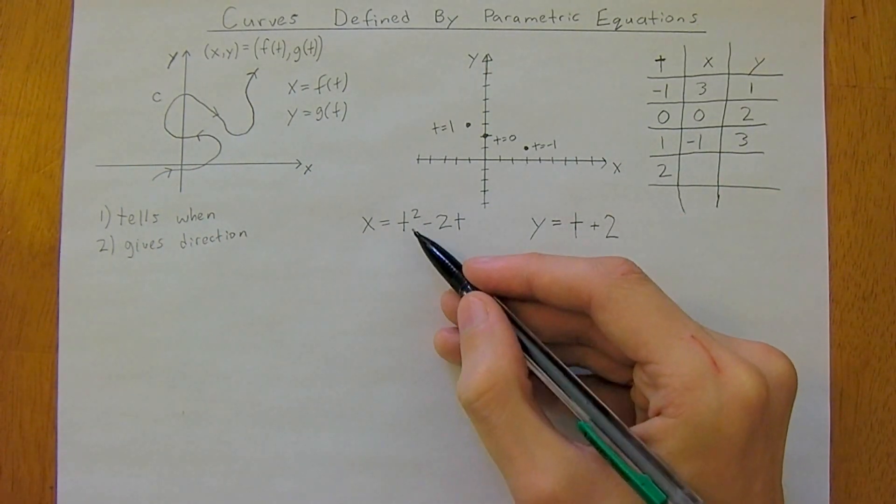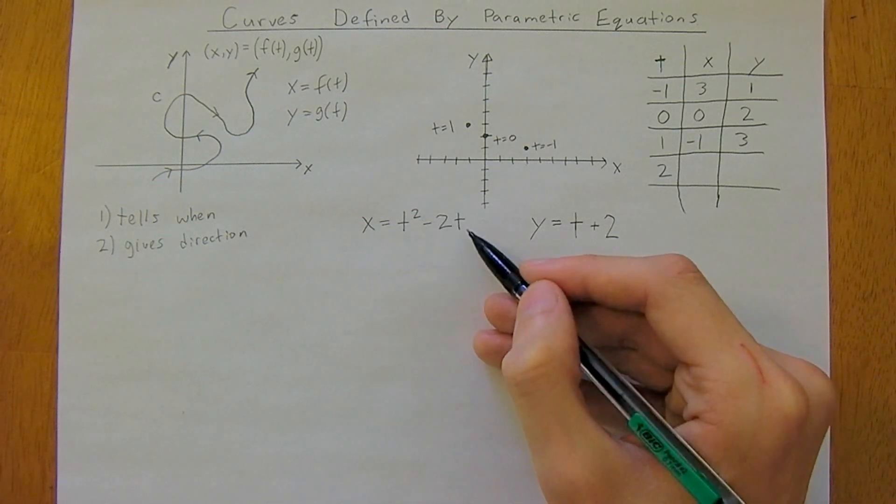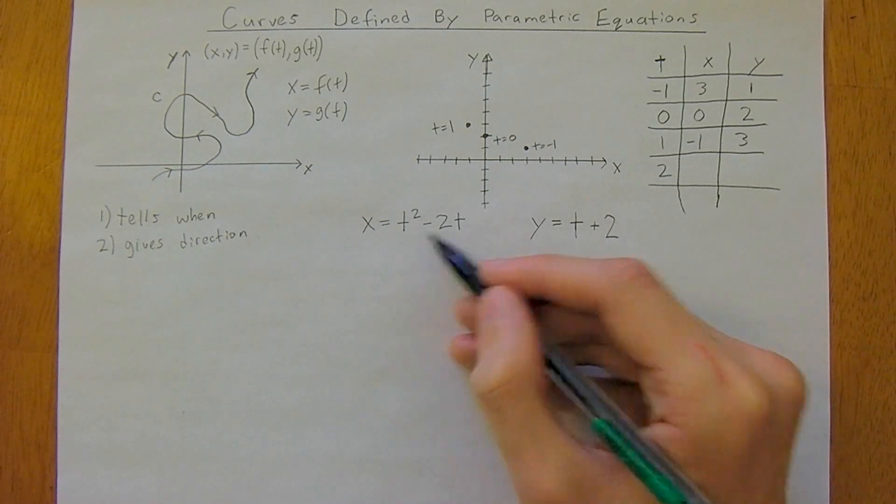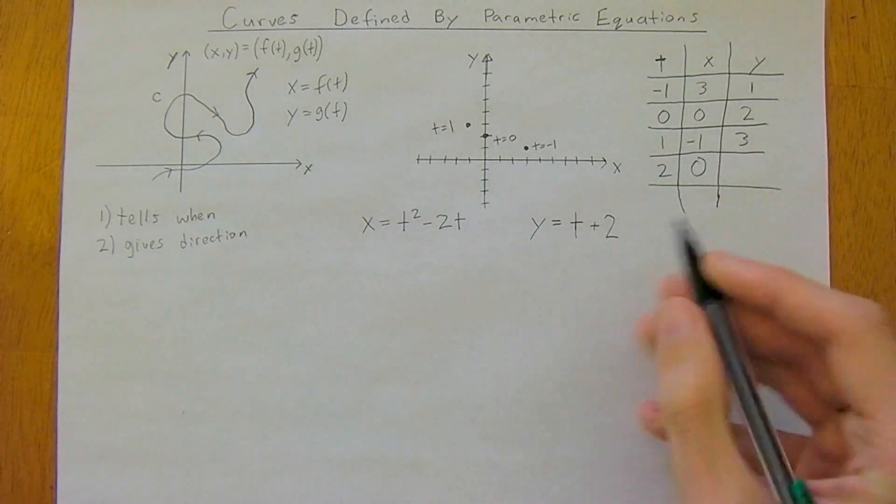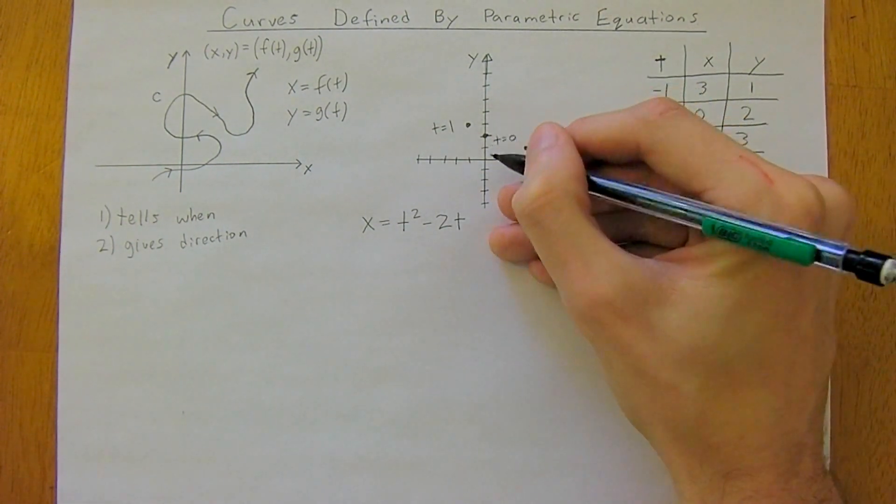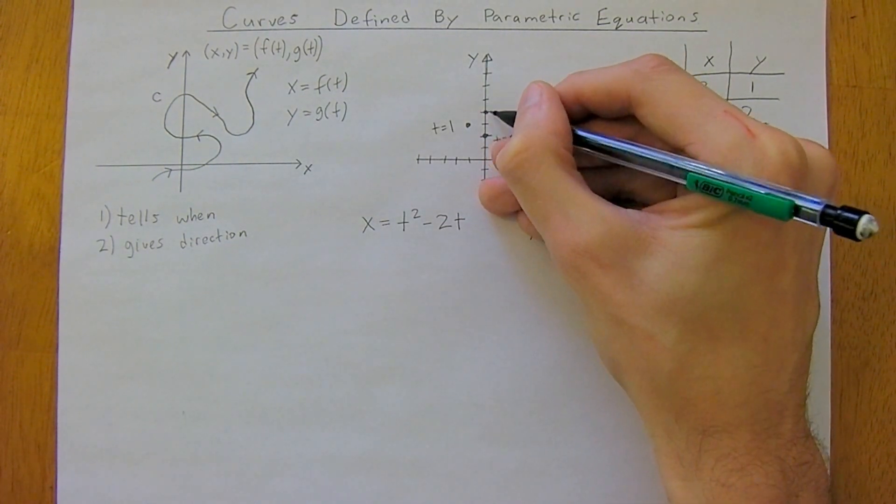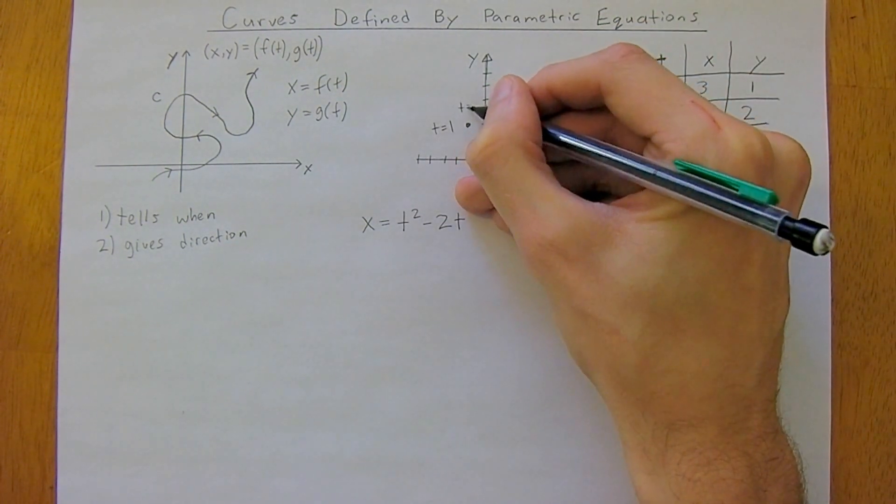Let's get another few points here so you can start seeing this curve come to life. 2 squared is 4 minus 2 times 2, so 4 minus 4, x is 0. And 2 plus 2, y is now 4. So 1, 2, 3, 4. It's going to start heading back to the right. t equals 2.